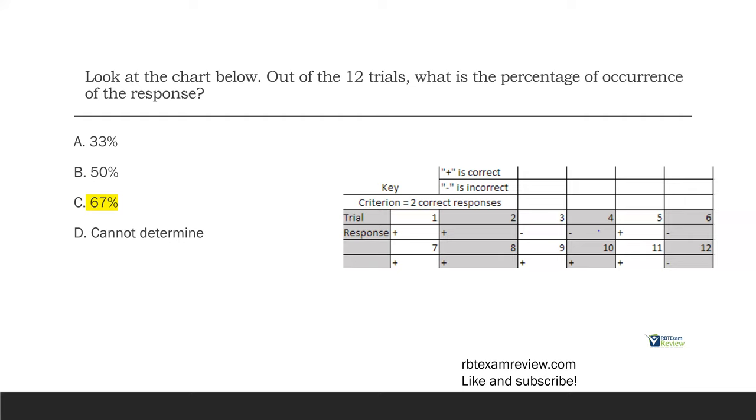Now, to find the percentage of occurrence, we just divide how many times it happened, 8, by the total number of possibilities, 12, and we get 67%. Very easy questions like this. Don't let the math intimidate you. You should be able to do this very simply. Percentage of occurrence. How often did the behavior occur? Count them up, divide them, get your percentage, get this question right.